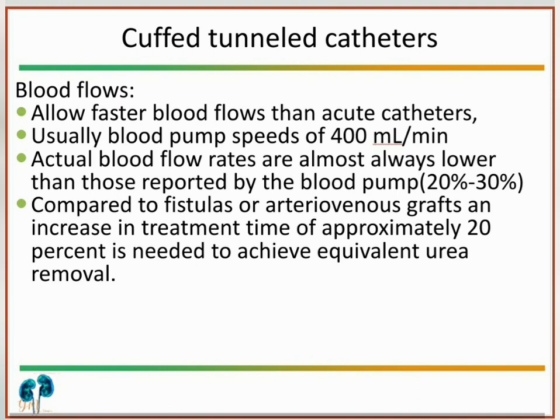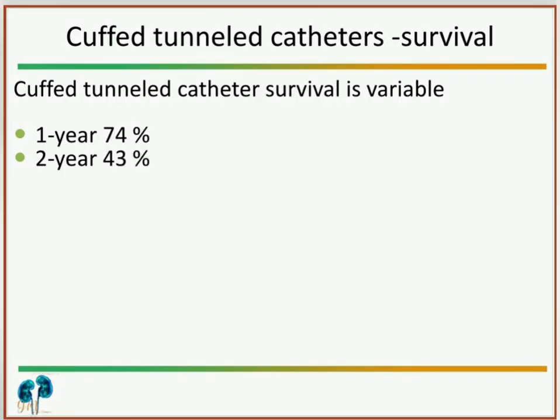Actual blood flow rates are almost always 20% to 30% lower than those reported by the blood pump, due to recirculation. Compared to fistula or graft, an increase in treatment time of approximately 20% is needed to achieve equivalent uremic clearance. Even though tunneled catheters are permanent, survival rates are 74% at one year and only 43% at two years.